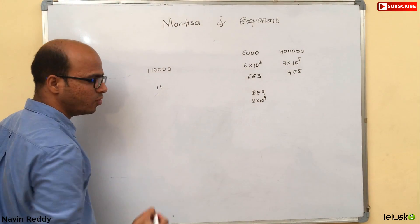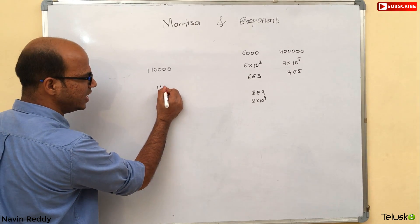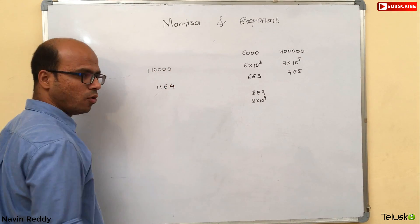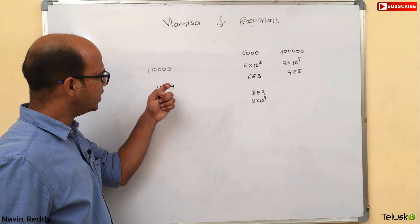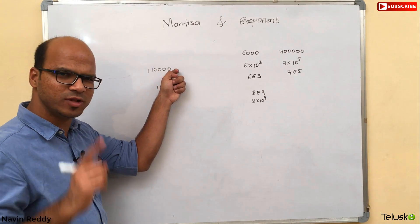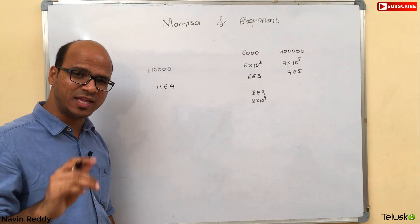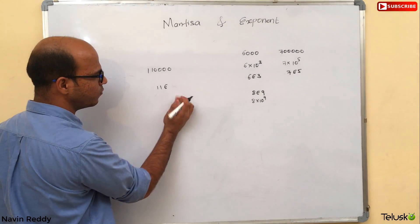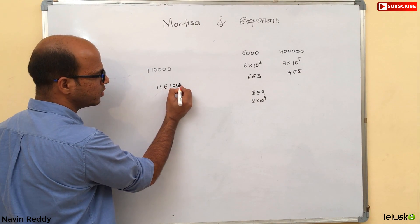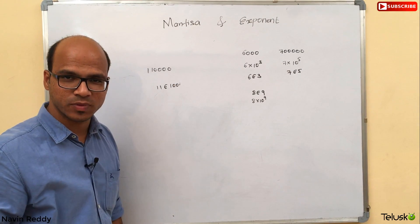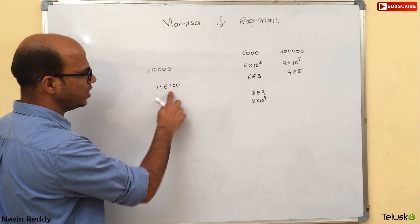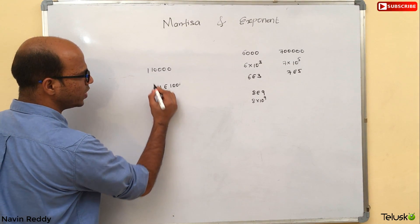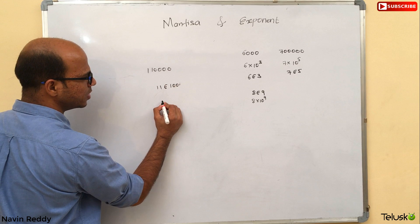It's very simple. You can say 11 then E then we have four zeros, so you could say 4. But wait — we are talking about binary system. We cannot write 4; we have to write 100, which represents 4 in binary. So this is 11E100.